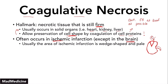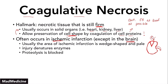When it comes to the actual mechanism, the injury itself is going to denature the enzymes. Because you're denaturing the enzymes, proteolysis is going to be blocked — you cannot break down your proteins. That's going to lead to a decrease in protein breakdown, since the enzymes that break down proteins are denatured and not functioning properly. This then allows the proteins to coagulate, and hence you see coagulative necrosis occurring.